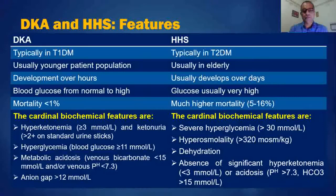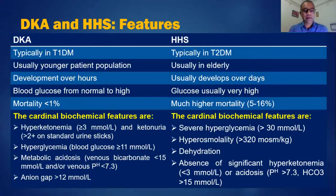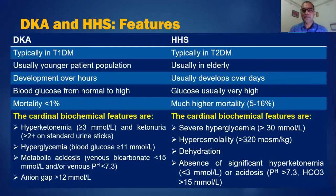HHS usually develops over days or weeks with a prolonged course. In DKA, blood glucose may be normal or high, but in HHS blood glucose is usually very high. DKA is now very well managed and mortality has decreased to less than one percent, whereas HHS has a relatively higher mortality even in developed countries, accounting for 5 to 16 percent.